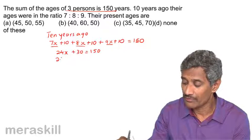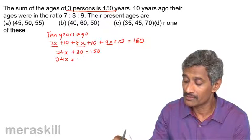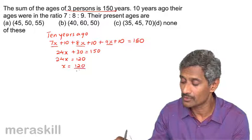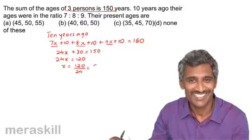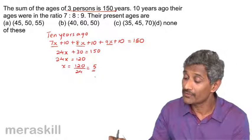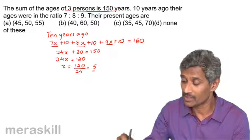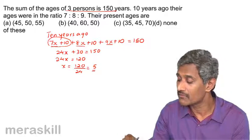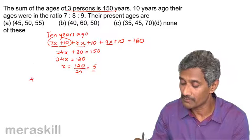So you have 24x is 150 minus 30, which is 120, and x is 120 upon 24 is 5. So if it is 5, we need to find their current ages. The current ages will be 7x plus 10, that is 7 into 5, 35 plus 10, 45.